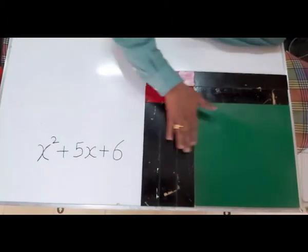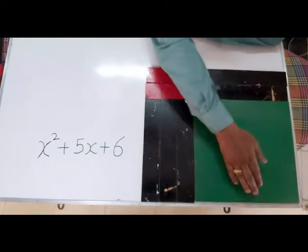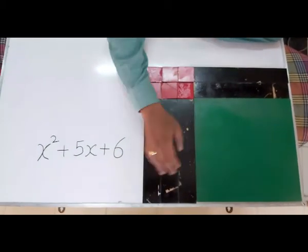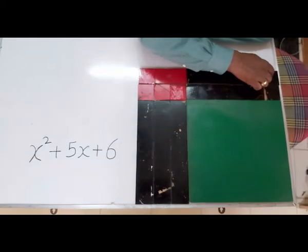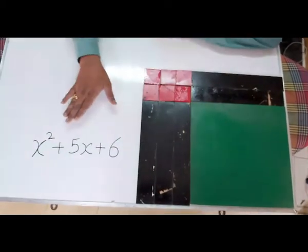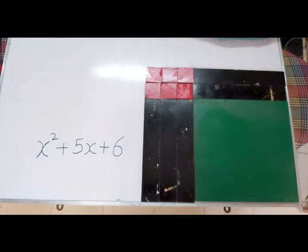That means we found out a rectangle whose length is x plus x plus 1, 2, 3, x plus 3 and breadth is x, 1 plus 2, x plus 2, x plus 3 into x plus 2. Now in this way we can split it as x plus 3 into x plus 2.